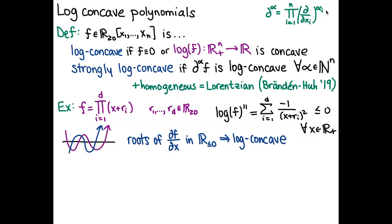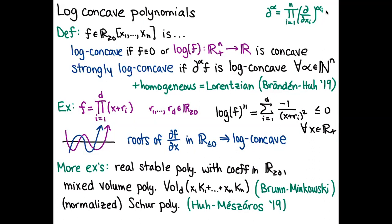Such a polynomial is also strongly log-concave because the roots of the derivative interlace those of f, giving another real-rooted polynomial with all roots at most zero. Redoing the computation gives log-concavity again, and from there you induct. There's also a multivariate generalization of real-rootedness called stability: real-stable polynomials with non-negative coefficients can similarly be shown to have this strong log-concavity property.